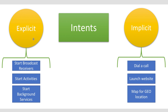Explicit intents, on the left hand side, designate the target component by its name. Since component names would generally not be known to developers of other applications, explicit intents are typically used for application-internal messages, such as an activity starting or launching a subordinate service, or launching a sister activity.